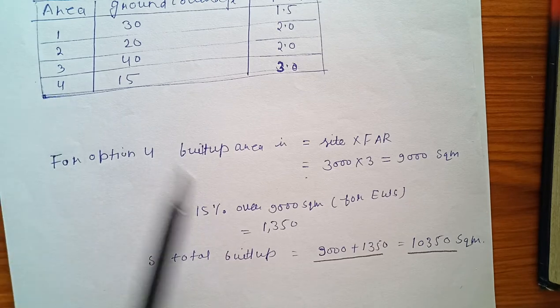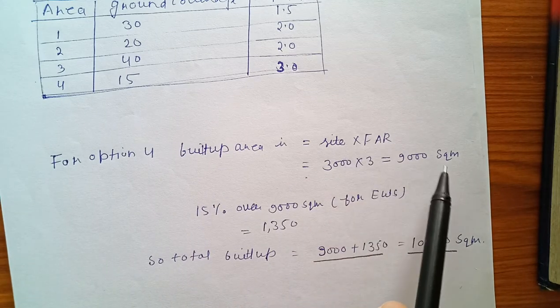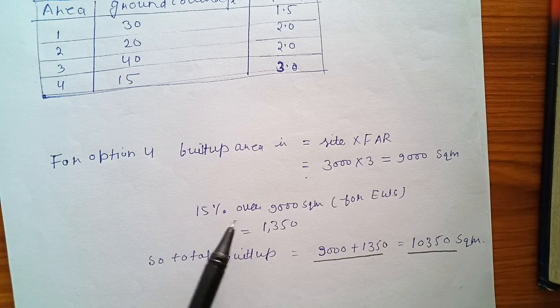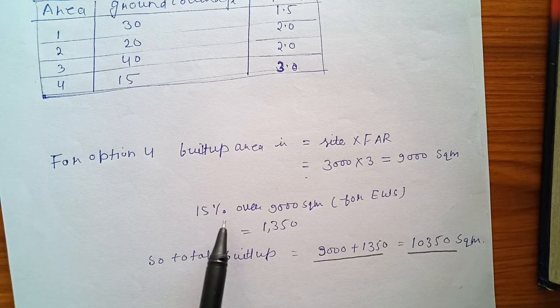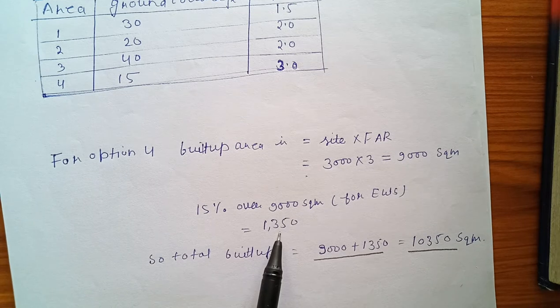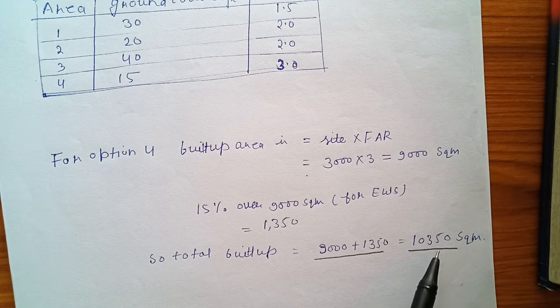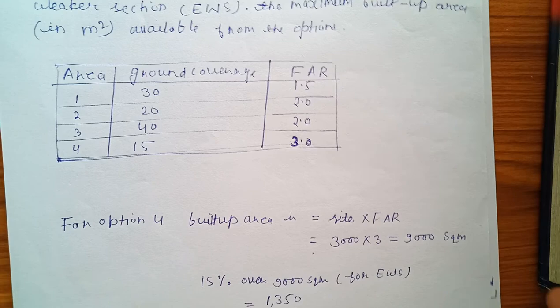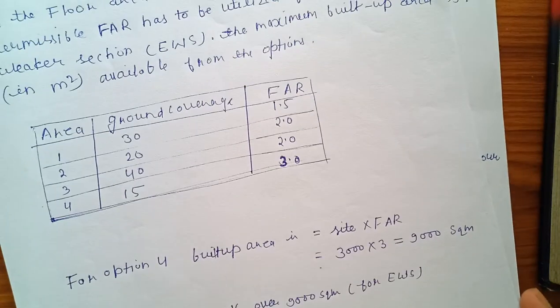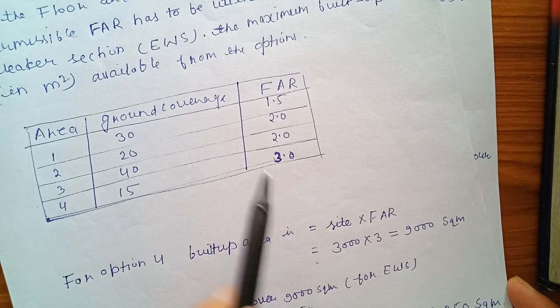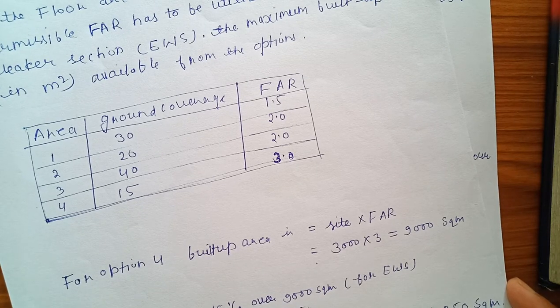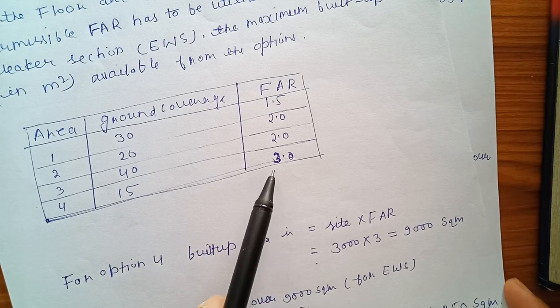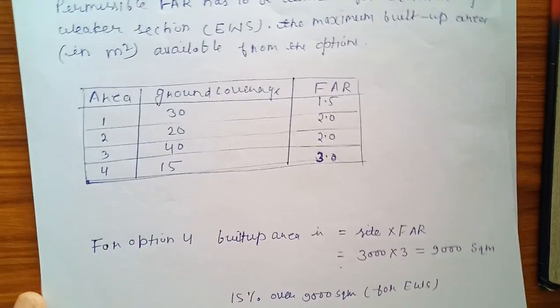Built-up area is site area times FAR, then 9000 square meters. And 15 percent over 9000 square meters for EWS, so 15 percent of 9000. Total built-up we get 10,350 square meters. But only from the options, FAR is equal to 3. So the trick in this question was 15 percent of total FAR is used, so we have to include this 15 percent of total FAR from here and then calculate, then we get the answer.